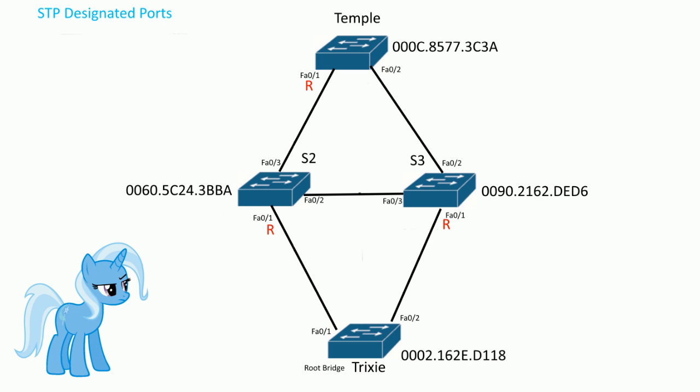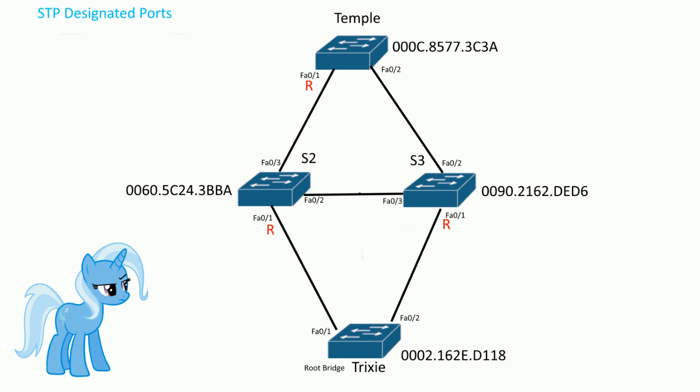The next step in the spanning tree protocol process, after finding the root bridge and root port roles, is to find the designated ports, which are allowed in forwarding mode. Right off the bat, on the root bridge, all ports are designated by default. The reason is that we try to find one path to the root bridge, so if a port were in a blocking state it wouldn't make sense — we're supposed to connect to that root bridge. So by default, all ports on the root switch are designated.